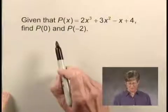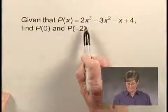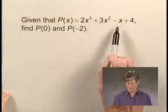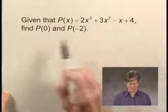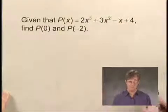In this exercise, we'll evaluate a polynomial. We're told that given that P(x) equals 2x cubed plus 3x squared minus x plus 4, we are to find P(0) and P(negative 2).